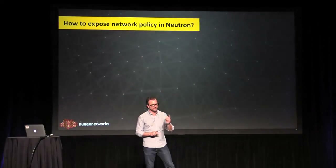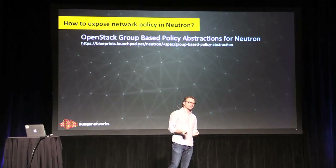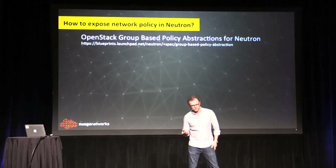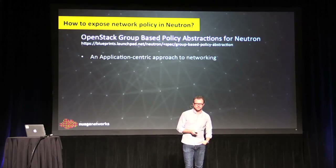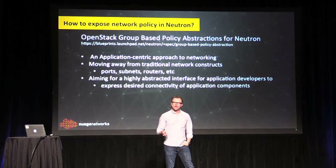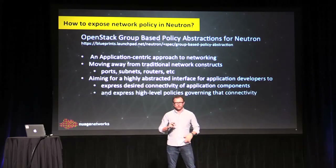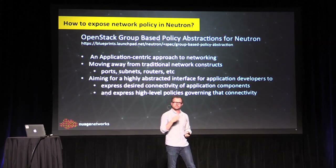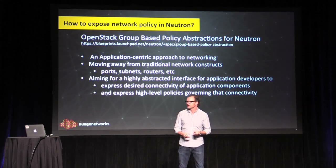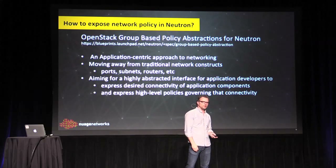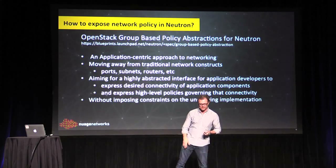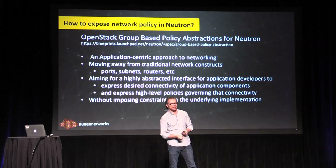Mike Dvorkin over there is helping a lot with what we're doing in OpenStack. How do we expose this into Neutron? There's activity underway that Nuage, Cisco, IBM, and several others are contributing to — it's called OpenStack Group Based Policy Abstractions. The desire is to present an application-centric approach to networking, moving away from traditional definitions like ports, routers, and subnets into a highly abstracted interface that lets developers define and consume API calls relevant to their needs. I need to group my app servers together, group my database servers together, and consume the security policy or traffic control policy between them without imposing constraints on implementation details.